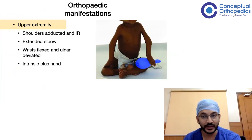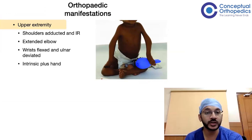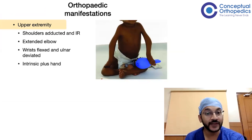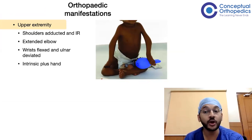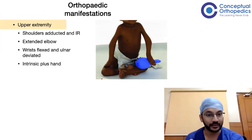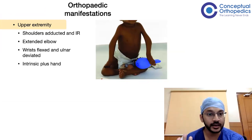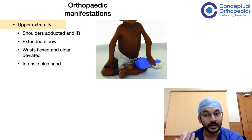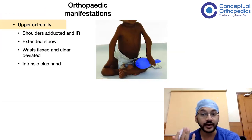Regarding orthopedic manifestations in the upper extremities in classical arthrogryposis, you see shoulders that are adducted and internally rotated, elbows that are extended, wrists that are flexed and deviated, and an intrinsic-plus hand. This is similar to birth brachial plexus palsy — Erb's palsy — where you see a waiter-tip deformity: shoulders adducted and internally rotated, elbows extended, wrists flexed but non-deviated, an intrinsic-plus hand, and adducted thumbs.